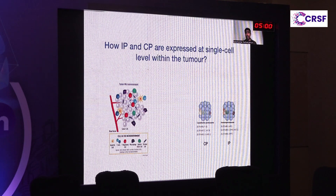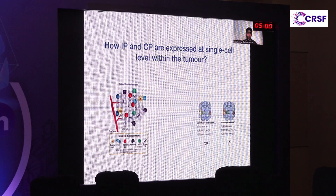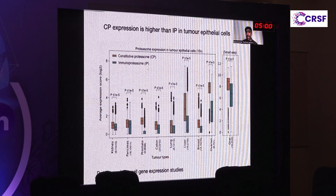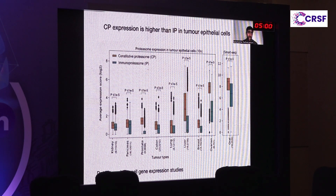We wanted to ask whether this high variability in immunoproteasome expression comes from tumor purity, since in bulk RNA-seq the expression comes not only from tumor cells but also neighboring stromal or immune cells, giving a collective expression signal. To check whether expression comes from immune cells or tumor cells directly, we looked at single-cell data and examined explicitly the tumor cells. As seen previously, constitutive proteasome is higher than immunoproteasome, and immunoproteasome expression remains highly variable across cells within each tumor.